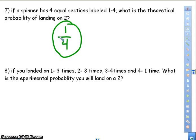Now, number eight gives us information. If you landed on one three times, two three times, three four times, and four one time, what is the experimental probability you will land on a two? So experimental probability is going to be from my experiment. What did I do within the experiment? So within this experiment, I spun how many times? It's three plus three is six, plus four is ten, plus one is eleven. So I spun my spinner eleven times. Now you're going to figure out how many of those times actually landed on a two. Well, it landed on a two three times. I can't simplify, and that's my experimental probability.